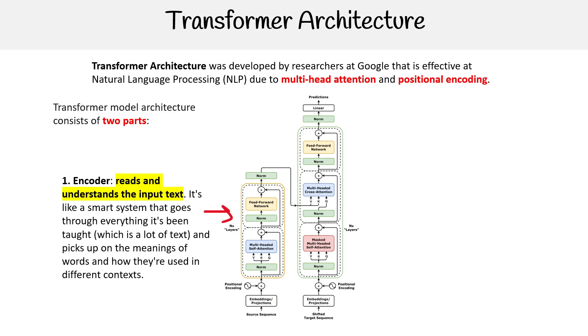Let's read about what the encoder is. It reads and understands the input text. It's like a smart system that goes through everything it's been taught and picks up on the meanings of words and how they're used in different contexts. So that's the high level.